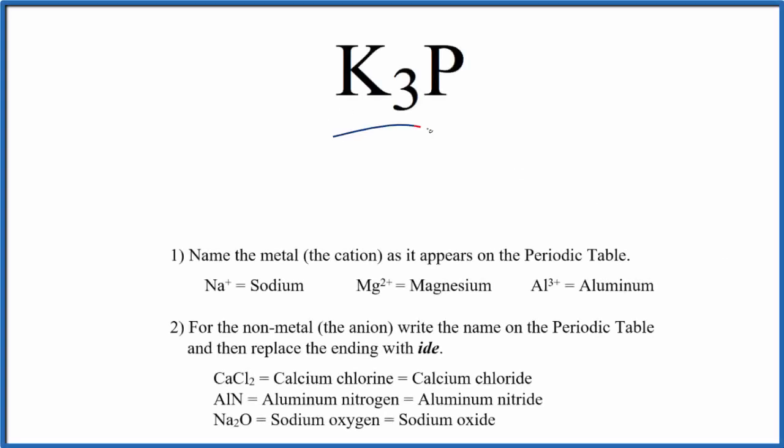To write the name for K3P, we first need to recognize that K, potassium, is a metal, and then this phosphorus here is a nonmetal. So we're going to use these rules here to write the name for K3P.